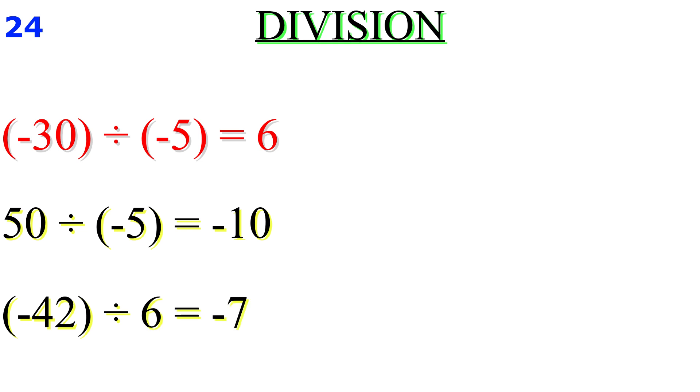Friend, on your screen. Minus 30 divided by minus 5 equals 6. 50 divided by minus 5 equals minus 10. Minus 42 divided by 6 equals minus 7.